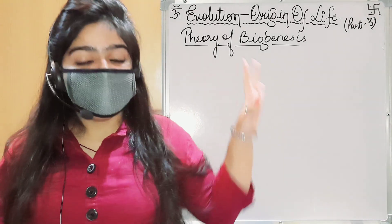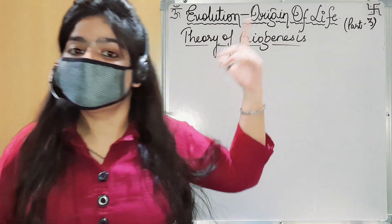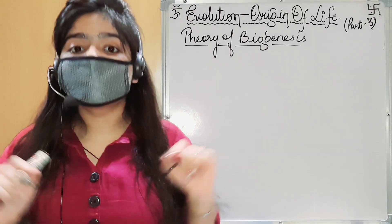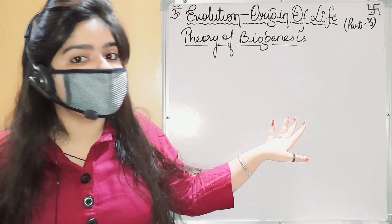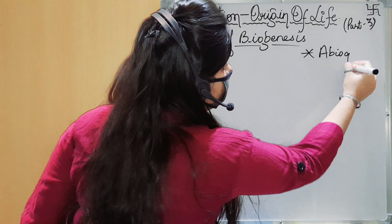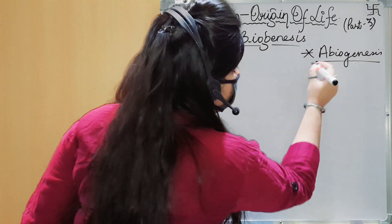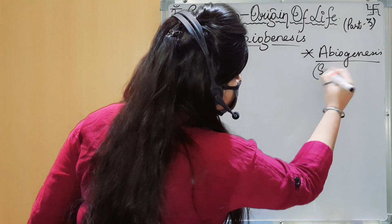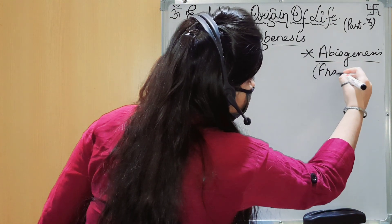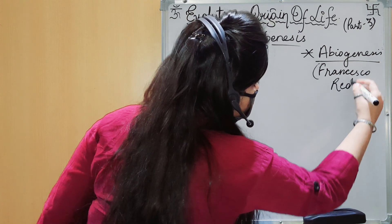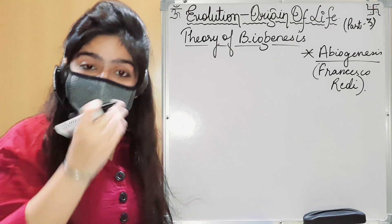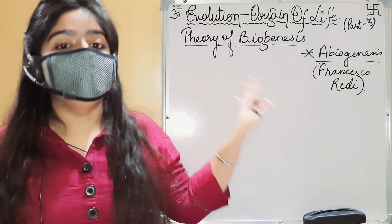When we talk about the previous theory, abiogenesis — which we also call spontaneous generation and autogenesis — that theory had to be discarded. Now, who discarded it? This is an important question. The theory of abiogenesis was discarded by Francisco Redi. Keep this in mind because it is an important point — you have to remember the name of this scientist.